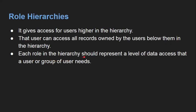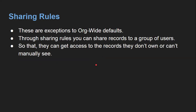Each role in the hierarchy represents a level of data access that a user or group of users needs. Next are sharing rules. When someone is not in your role hierarchy but you still want to share records with them, sharing rules handle those exceptions to org-wide defaults. Through sharing rules you can share records to a group of users so they can access records they don't own. This is another way of sharing records, and you can see it practically by watching the playlist linked in the description.